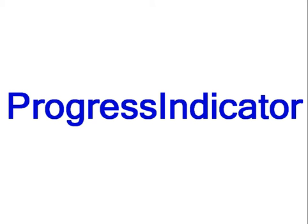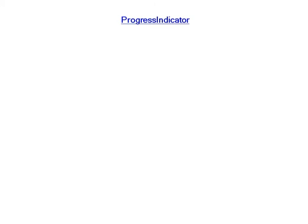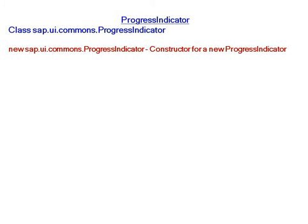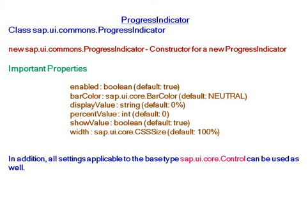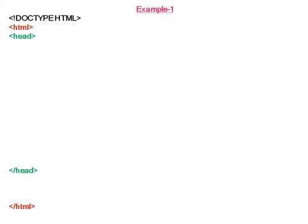SAP UI5 Progress Indicator belongs to class sap.ui.commons.ProgressIndicator. For creating a new progress indicator, the constructor is new sap.ui.commons.ProgressIndicator. Important properties are enabled, bar color, display value, and so on. In addition, all settings applicable to the base type sap.ui.core.Control can be used as well.